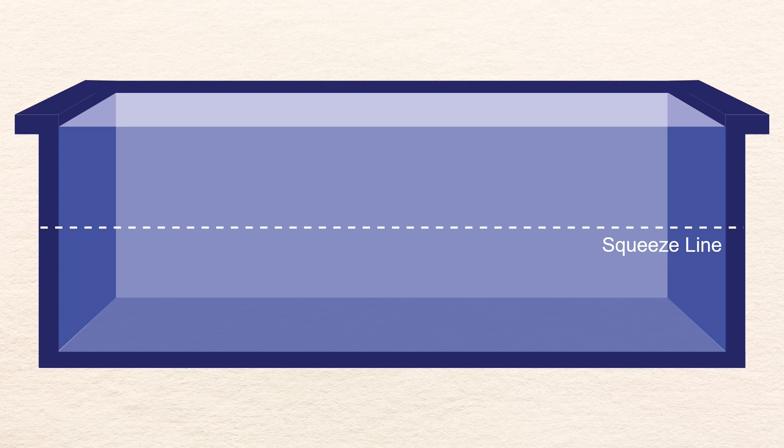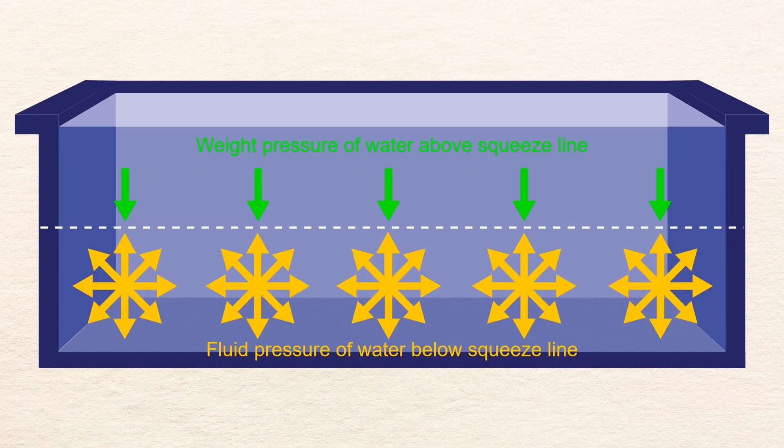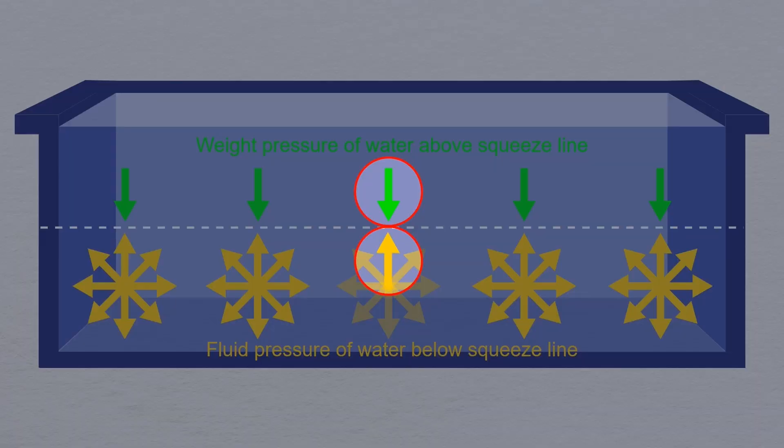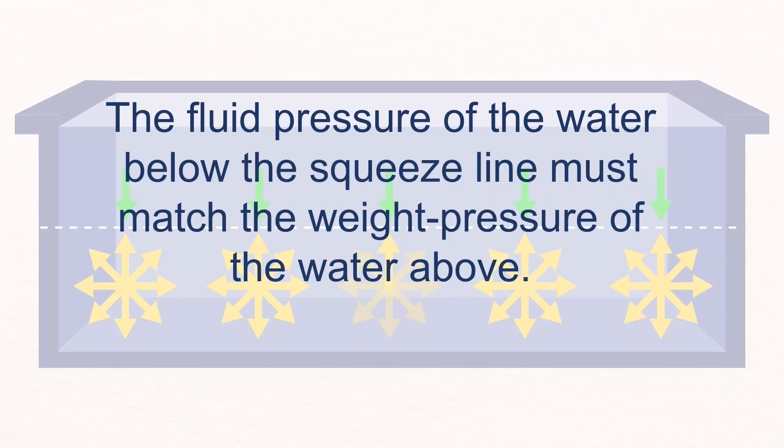Let's put an imaginary line across the pool. It doesn't matter at what depth. We'll call this the squeeze line. As represented by the green arrows, the weight of the water above the squeeze line is pressing down at every point across the length of the pool. Let's simplify that to five arrows. Because the water below the squeeze line is being squeezed, its fluid pressure rises to the exact point where it matches the weight pressure above the squeeze line. To repeat, the fluid pressure below equals the weight pressure above.